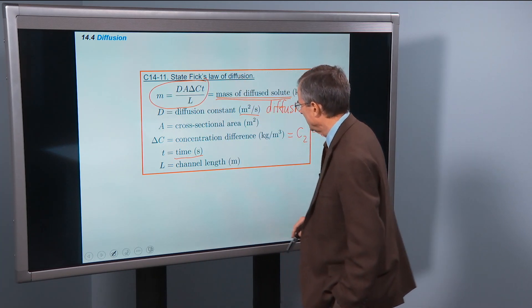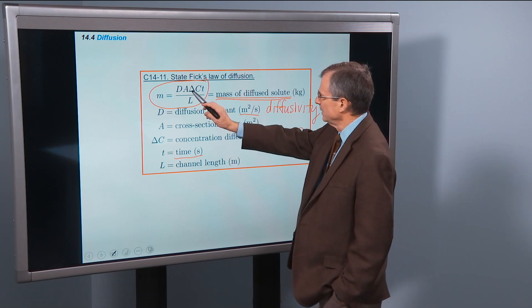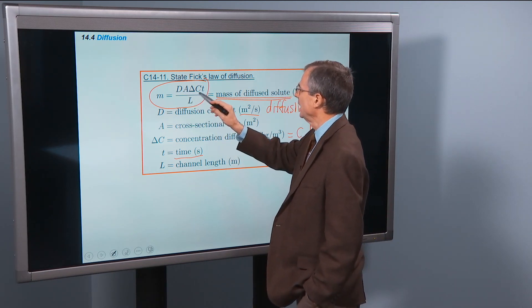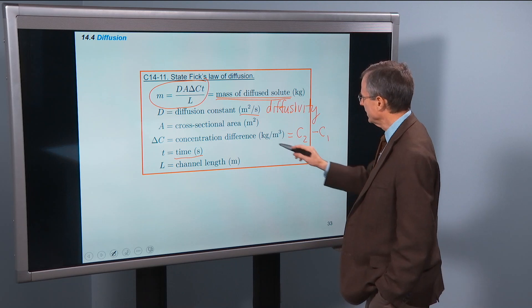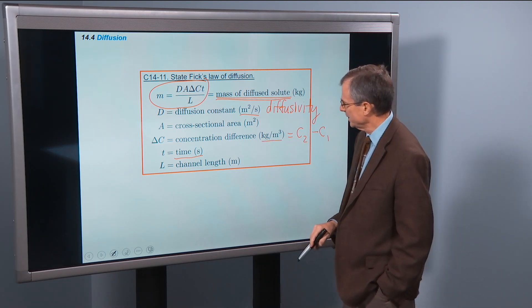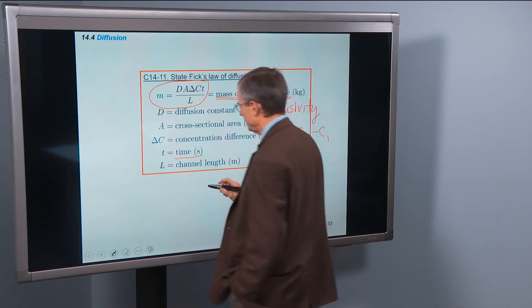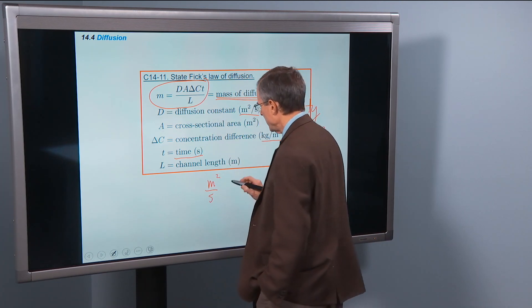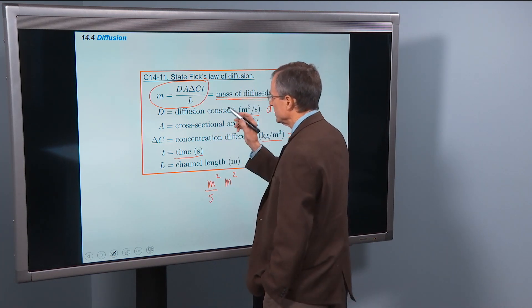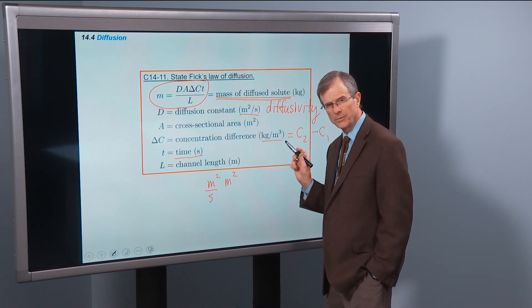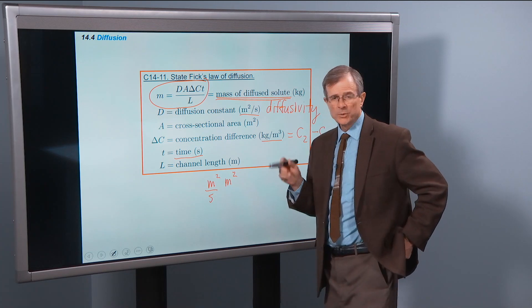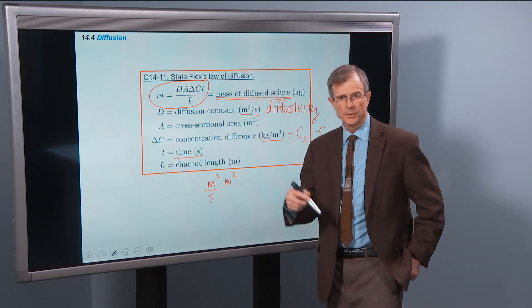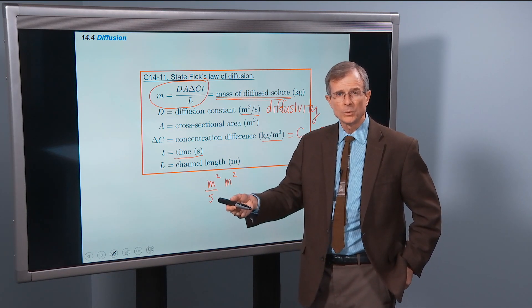Meter squared per second times, area's measured in meters squared, so that'll be meters to the fourth per second. And then change in concentration, that's kilograms per meters cubed. So that takes us down to, well, let's actually work it out. So D is meters squared per second. A is meters squared. C concentration, that's a mass per unit volume. So some of you in your chemistry will have seen concentrations measured in number of particles per unit volume, or even in number of moles, moles per unit volume. Lots of different ways of measuring concentration.